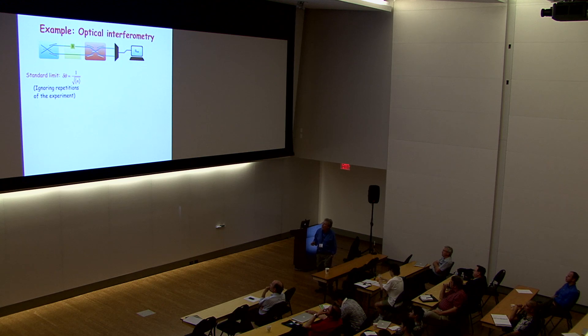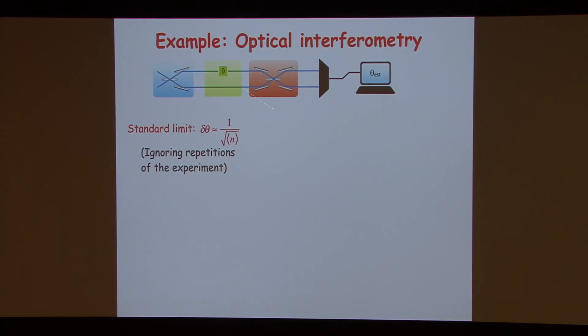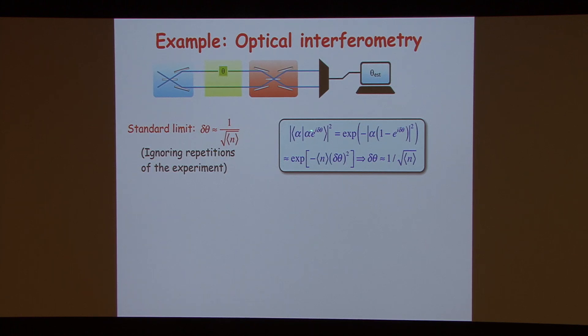Let me give an example from optical interferometry, which we'll return to frequently. We have the Mach-Zehnder interferometer, and there is some phase which you would like to estimate. The standard limit for the uncertainty of the estimation of the phase is given by one over the square root of the average number of photons in the field. You can derive this by looking at the scalar product between a coherent state and a coherent state with a displaced phase — for small delta-theta it's a Gaussian, and its width gives precisely the standard limit. The standard limit is related to the distinguishability between two coherent states with different phases.